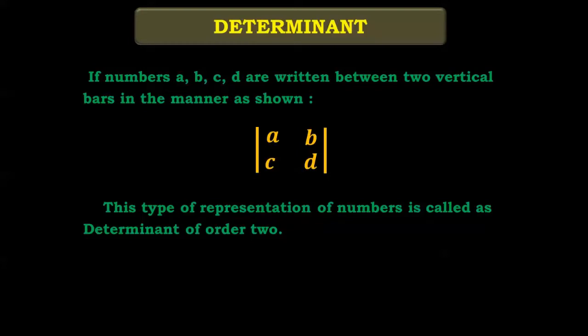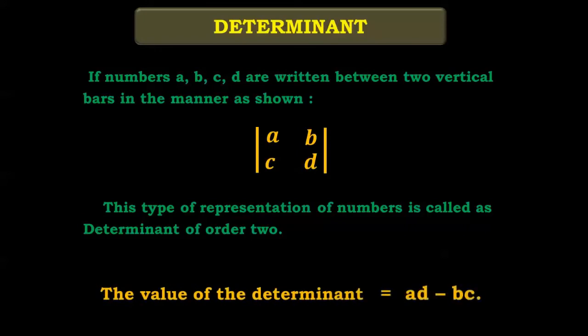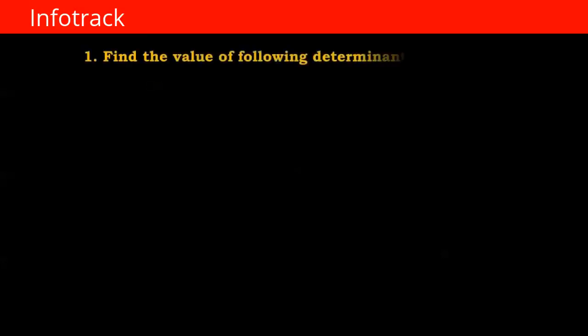Now we can find the value of a determinant. You have to cross multiply: A into D minus B into C. This is the value of the determinant: AD minus BC.